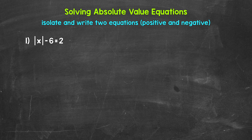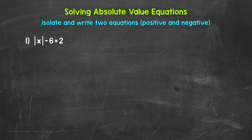Let's jump into number one, where we have the absolute value of x minus six equals two. The first thing we need to do when we have an absolute value equation is look to see if the absolute value is isolated on one side of the equation. In this example, the absolute value is not isolated — we are subtracting six from it. That means we need to start by isolating the absolute value.